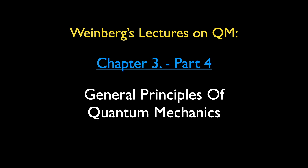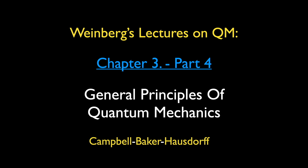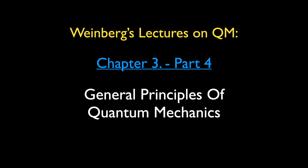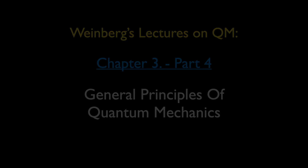Hello friends, this is lecture 4 of a series where we go through the book on quantum mechanics by Steven Weinberg. This is part 4 of chapter 3 on the general principles of quantum mechanics. As explained in the first lecture, we will be reading the book in the sequence chapter 3 then 2 followed by 1 and continue from there according to the regular order of the book.